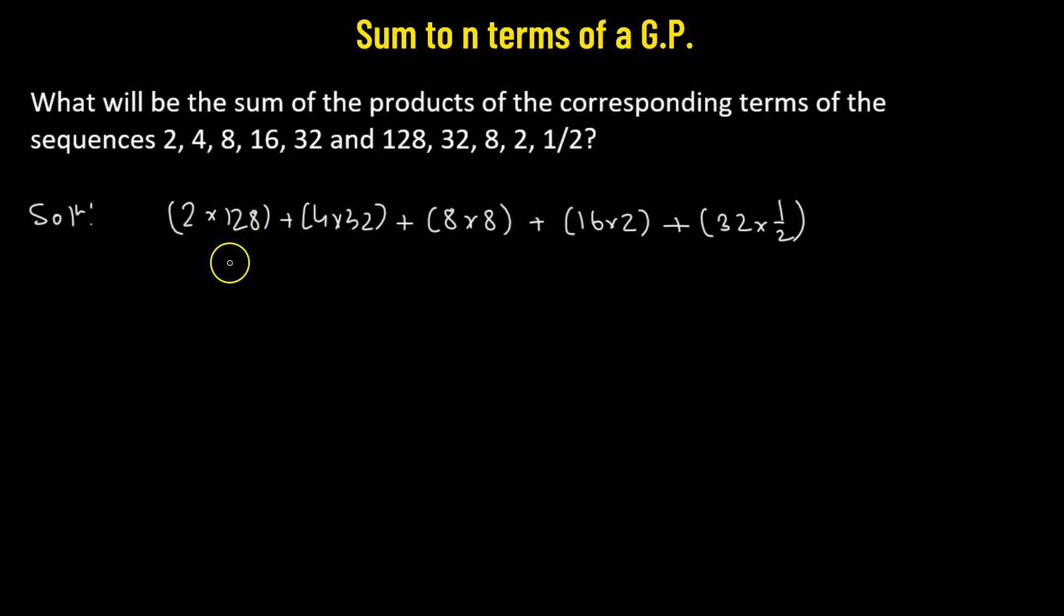Which means we have 2 times 128, so that's 256. This will be added to the second term, which is 4 times 32, so that's 128, plus 8 times 8, so that's 64, plus 16 times 2, that's 32, and half of 32 is 16.